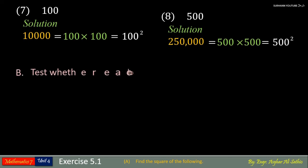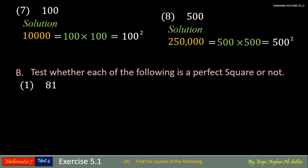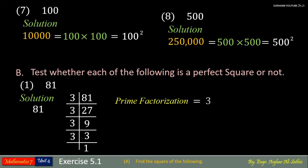Question B of exercise 5.1 says test whether each of the following is a perfect square or not. Problem number 1: 81. To know if it's a perfect square or not, we have to follow some steps. First of all, find and list all its prime factors. Now group the same factors in pairs. Now see, each prime factor is in pairs. If each prime factor is grouped, then the number is perfect square.